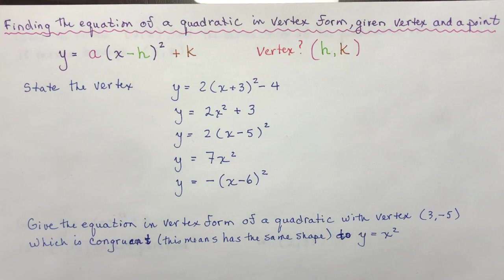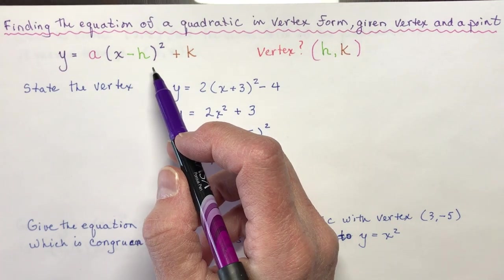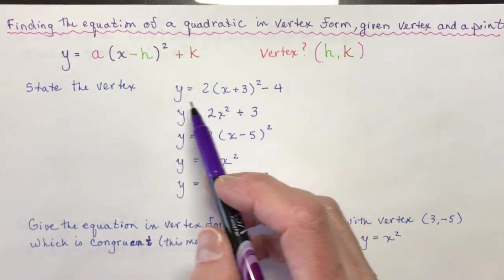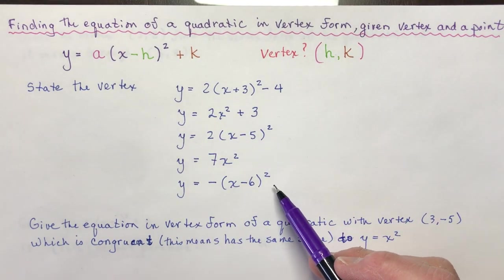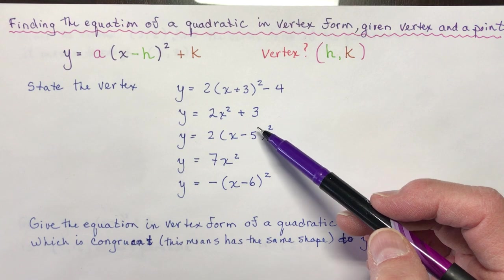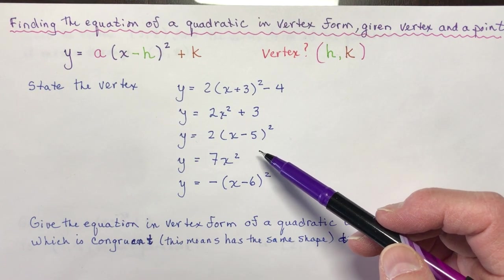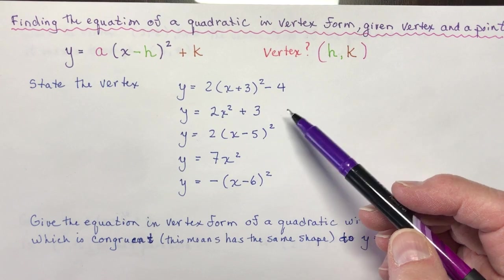Because sometimes students get confused because not all of the parts of y equals a(x minus h) squared plus k are in the equation. These equations are all still in vertex form. In other words, with each of these equations, I can tell you what all the transformations would be to the graph of y equals x squared.